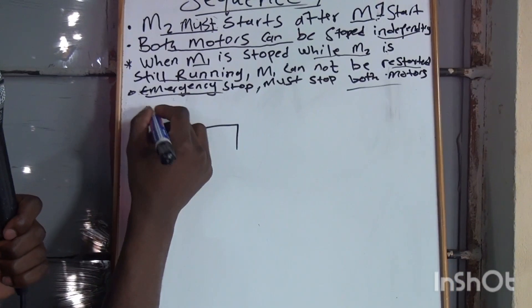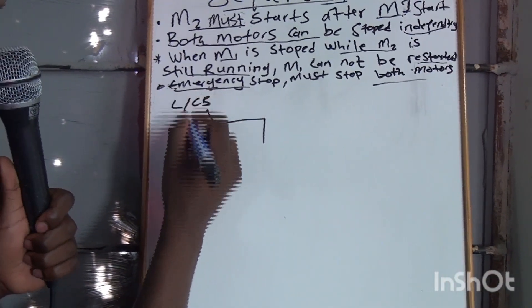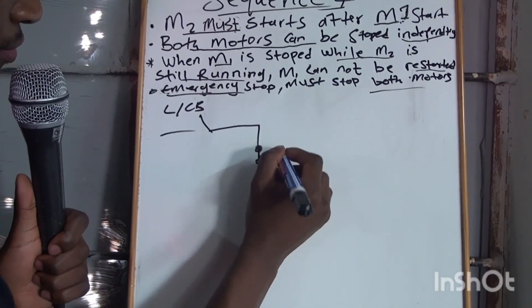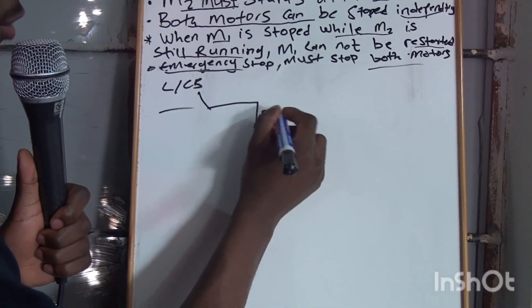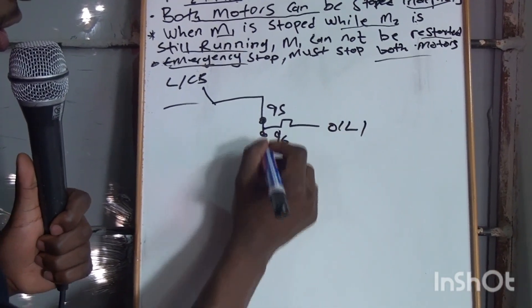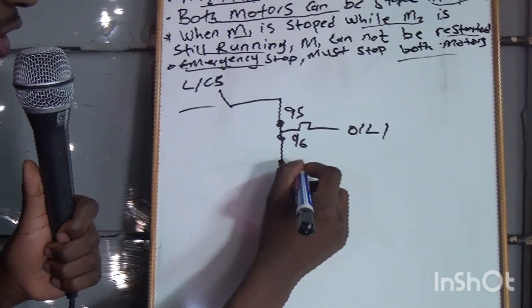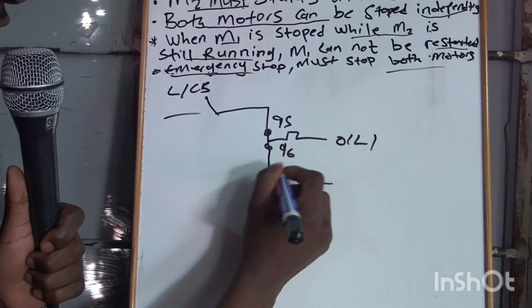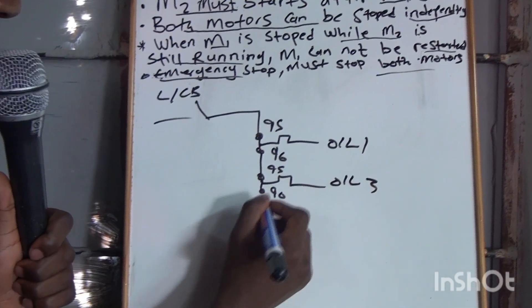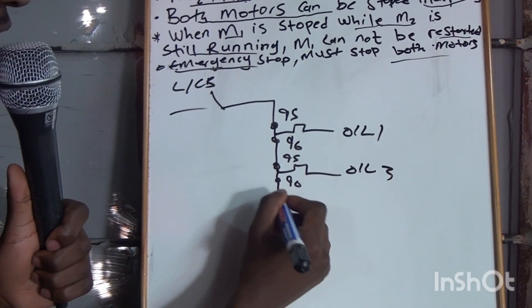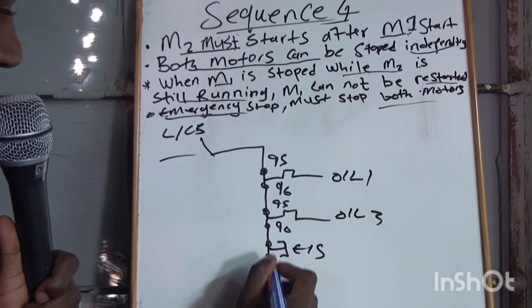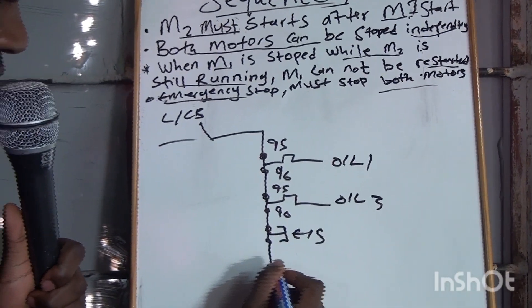Here you'll have your line, or you can say control breakers. And then you'll have your 95 and 96 — Overload 1 here. And then you'll have your 95 and your 96 — Overload 2. And then you have your emergency stop button.